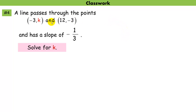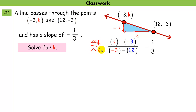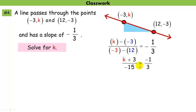Number 4: a line passes through two given points and has a slope of negative 1 over 3. As x increases, y decreases — y drops by 1 as x increases by 3. To find k, I use the slope formula — change in y over change in x — set it equal to negative 1 over 3, and solve using cross multiplication. Subtracting 9 and dividing by 3, I find k equals 2.